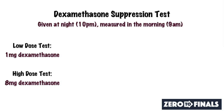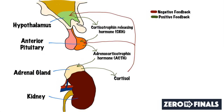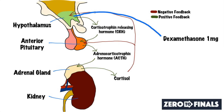Let's look at the low dose test with one milligram of dexamethasone. In a normal situation, this one milligram of dexamethasone — an exogenous steroid that acts similarly to cortisol — will act on the hypothalamus to suppress CRH, and on the pituitary to suppress ACTH, which in turn causes a reduction in cortisol. So a normal response to the low dose test is a reduction in cortisol.